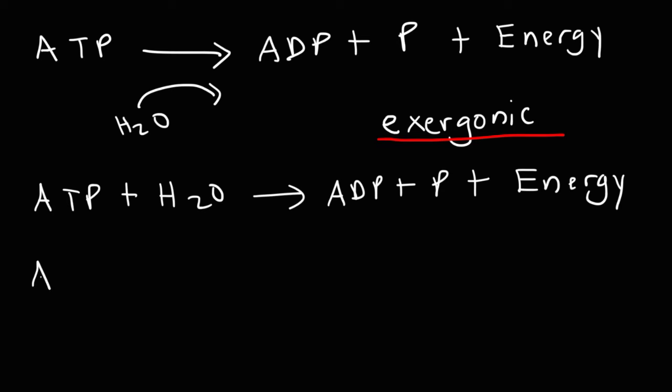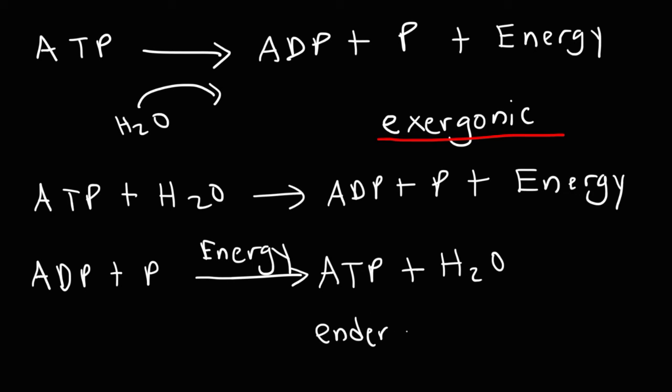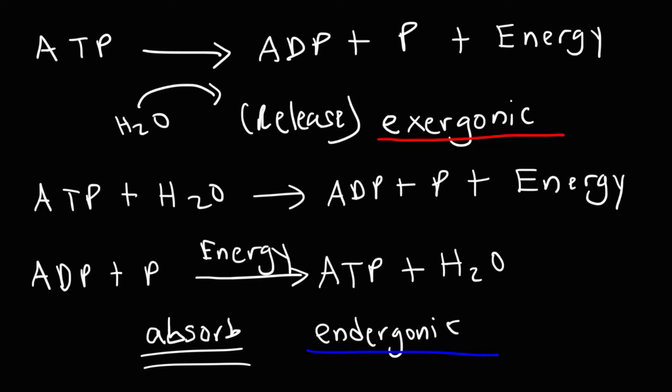Now let's talk about the reverse reaction, that is making ATP from ADP. So when we combine ADP or adenosine diphosphate with phosphate and if we put energy into the system, some of that energy is going to be stored as ATP and water is going to be a product as well. Because we're using energy to make this reaction work this is an endergonic reaction. So make sure you understand that. Exergonic reactions release energy and endergonic reactions absorb energy or take in energy. So when ATP converts into ADP energy is released. That's an exergonic process. When we're making ATP we're absorbing energy to do that. So that's an endergonic process.